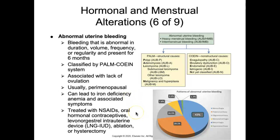Treatment options include NSAIDs, oral hormonal contraceptives, levonorgestrel-releasing intrauterine devices that deliver a steady amount of progesterone directly into the uterus to stabilize and suppress endometrial tissue, and ablation or hysterectomy. Unfortunately, abnormal uterine bleeding is the leading reason why people get hysterectomies.